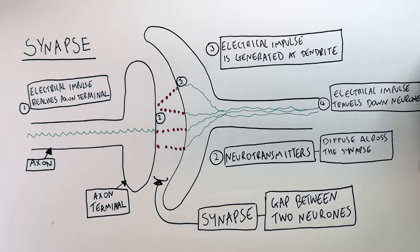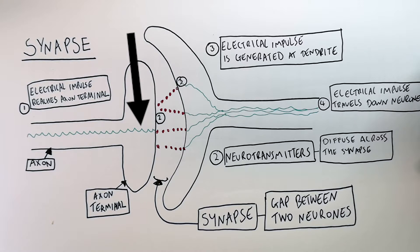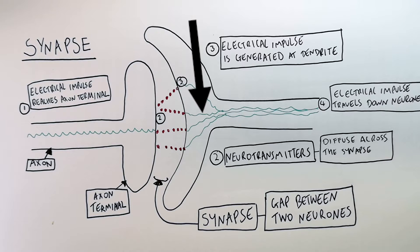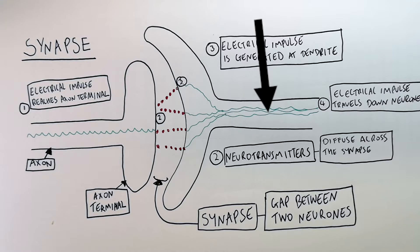So let's recap. The electrical impulse reaches the axon terminal of the first neuron. It then generates neurotransmitters that diffuse across the synapse from a high to low concentration, and then it generates another electrical impulse in the dendrite of the new neuron. The electrical impulse is then transmitted down the new neuron.